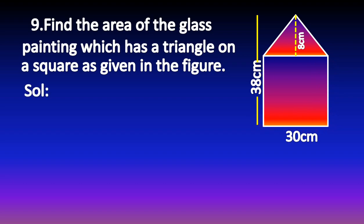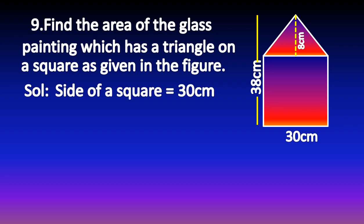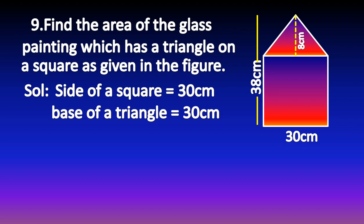Now we have to find the area of the square as well as the area of the triangle, then add both areas to find the area of the glass painting. The side of the square is 30 cm, and the base of the triangle is also 30 cm.